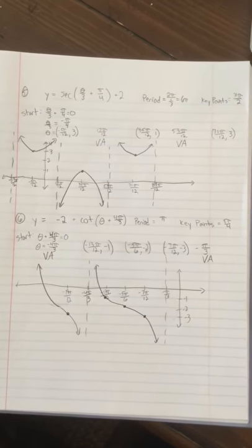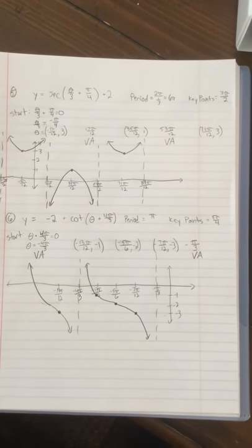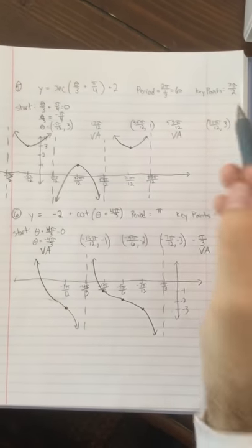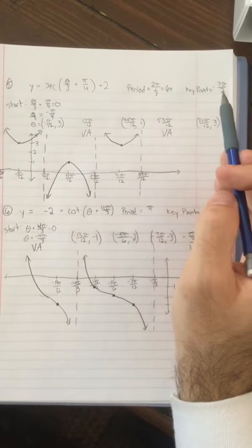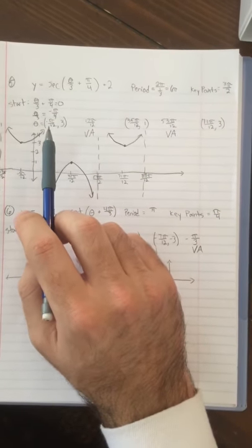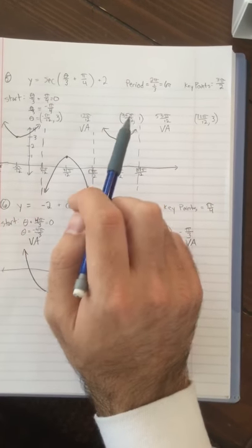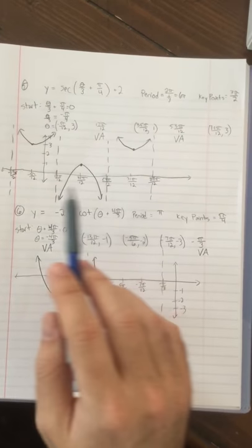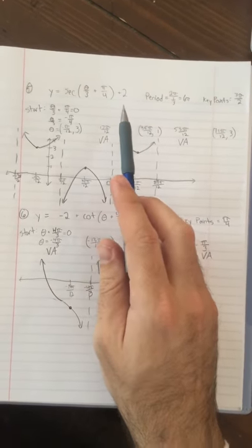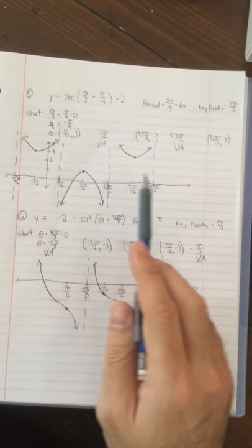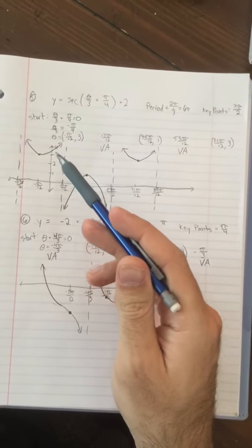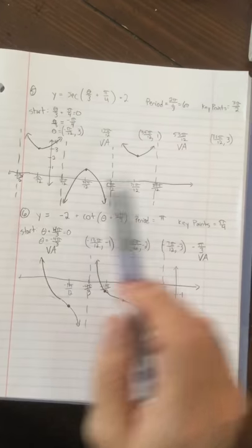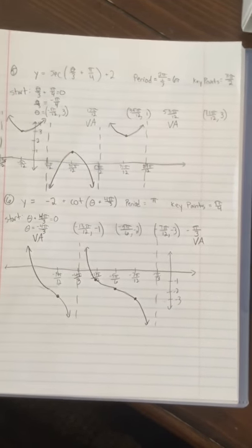Moving on to number five — a secant graph. Knowing the shape: it starts with a min point, then a vertical asymptote, max point, vertical asymptote, and another min. The period is again 2π over B, and dividing by 4 gives our key point spacing. The starting point is at negative π over 12, then I add 3π over 2 each time — these are also hard values, so you might have gone up by different amounts. The 2 tells me the center of our graph is at 2, and with amplitude 1, the points are 1 above and 1 below the center. I added a few more values on each side to show that the graph continues.